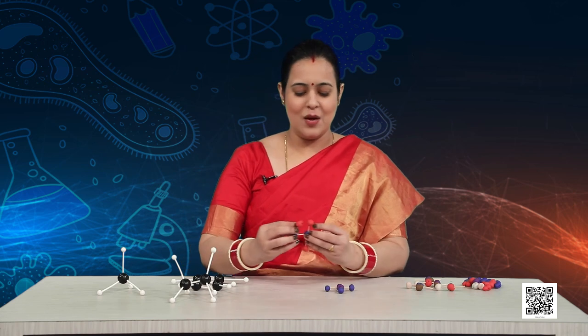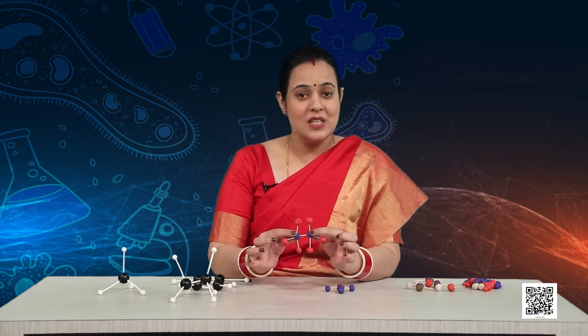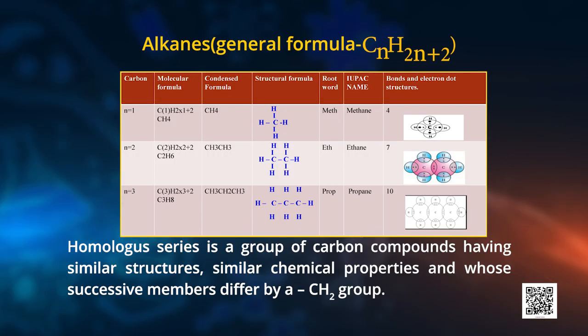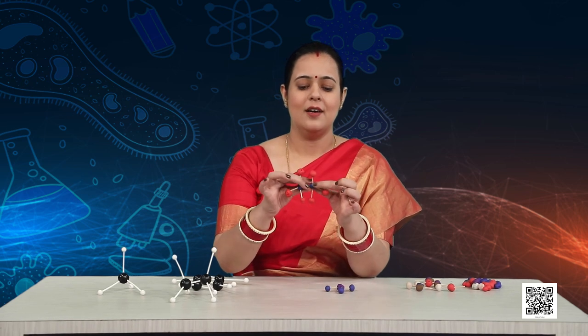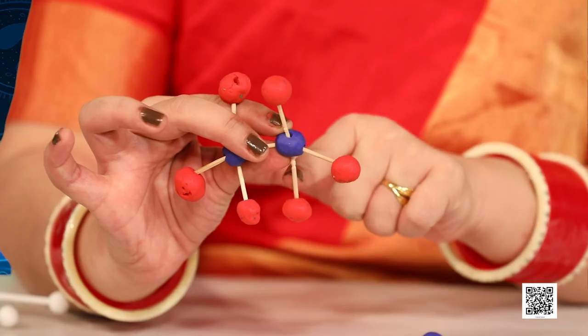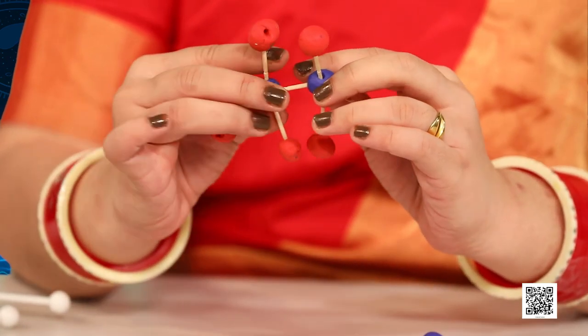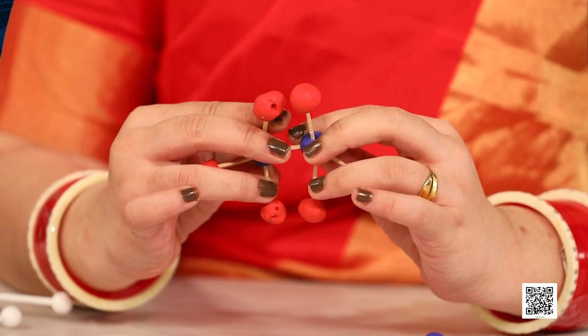When you form the second member, you can see two carbons with one bond between them showing catenation, and three hydrogens are placed on each carbon. This is the second member of the alkane series, with molecular formula C2H6. Its name will be 'eth' because there are two carbons, ending with 'ane', so the name becomes ethane. The total number of bonds in ethane is 7.